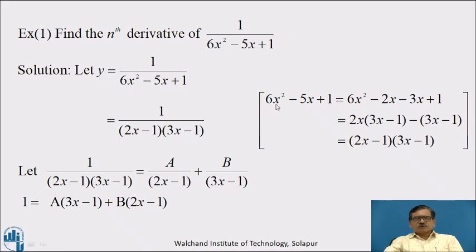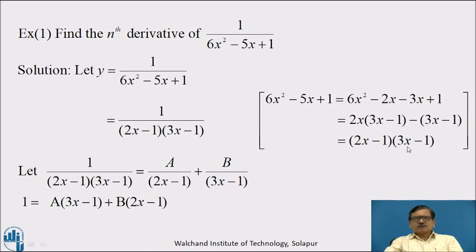We have 6x² minus 5x plus 1. We can write this as 6x² minus 2x minus 3x plus 1, adjusting the middle term such that the product is plus 6 and the sum is minus 5. That is, the product of minus 2 and minus 3 is plus 6, and their sum is minus 5. Taking 2x common from the first two terms gives 2x(3x minus 1), and taking minus sign common gives minus(3x minus 1). Therefore, taking 3x minus 1 common, the factors are (2x minus 1)(3x minus 1).